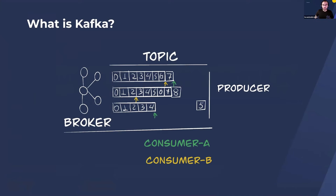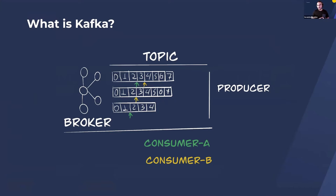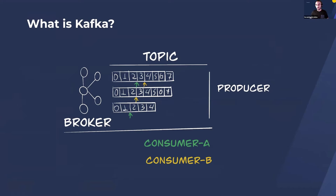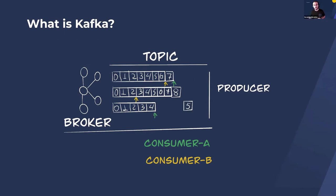First I will briefly describe what Kafka is. Kafka is essentially a stream processing platform. We use it at TransferWise as our backbone for event processing, and most of the async cross-service communications happen through Kafka. It's our central infrastructure that is very important for TransferWise.